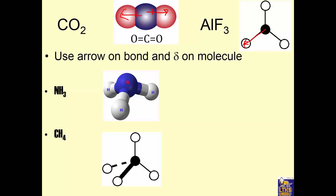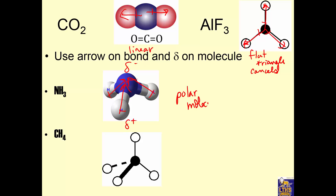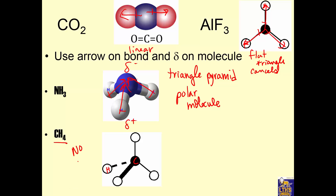Polar bond, polar bond, polar bond — flat triangle, so the shape matters. Triangle cancels. This is linear, but triangle cancels. Polar bond, polar bond, polar bond — kind of negative up here, kind of positive — polar molecule. This shape is a triangle pyramid. And this one — look, it's CH4. No arrow at all because C and H has such a small electronegativity difference — so it's a non-polar molecule. That is it with polarity and molecules.